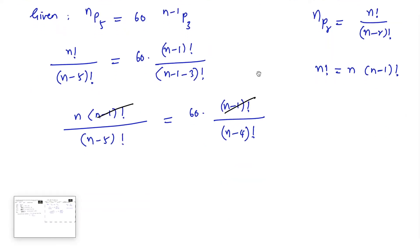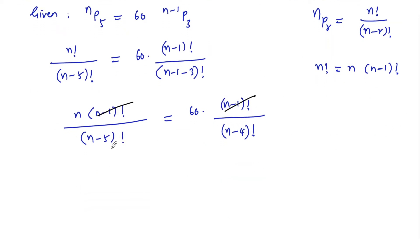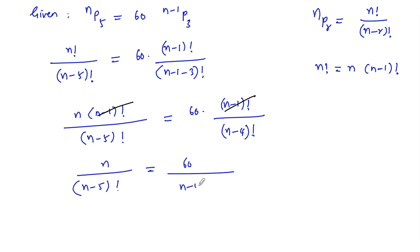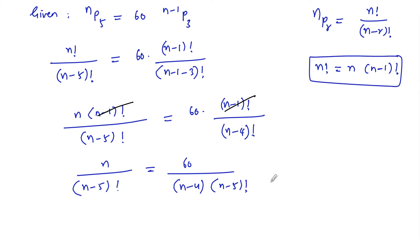In the denominator, n minus 5 factorial is on one side and n minus 4 factorial on the other side. Since n minus 4 is greater, we can split n minus 4 factorial as n minus 4 into n minus 5 factorial. Using the concept n factorial equals n into n minus 1 factorial, we cancel n minus 5 factorial from both sides.